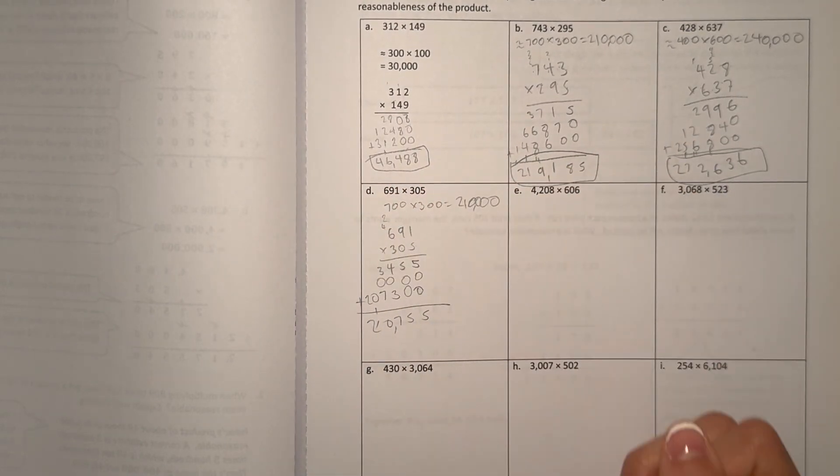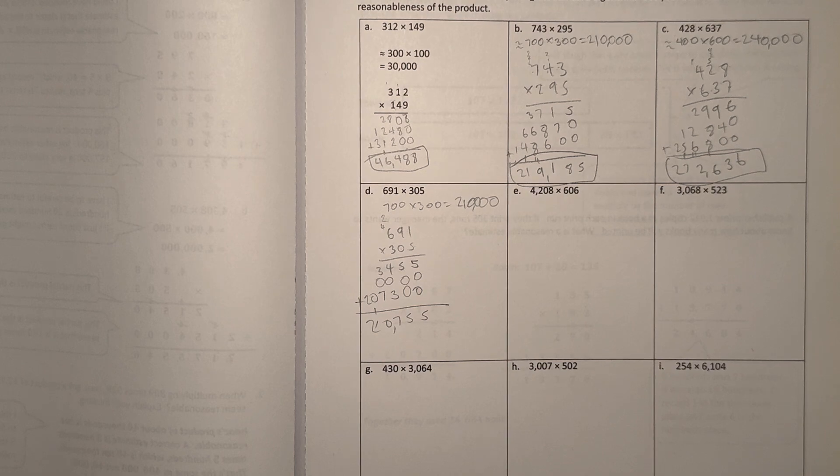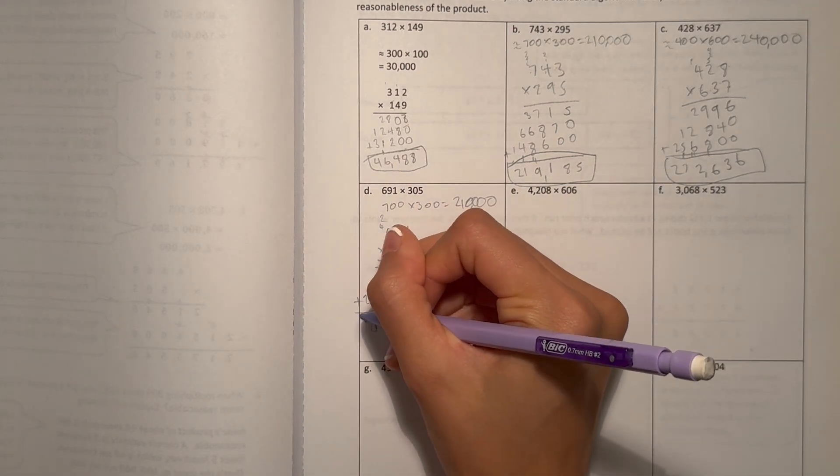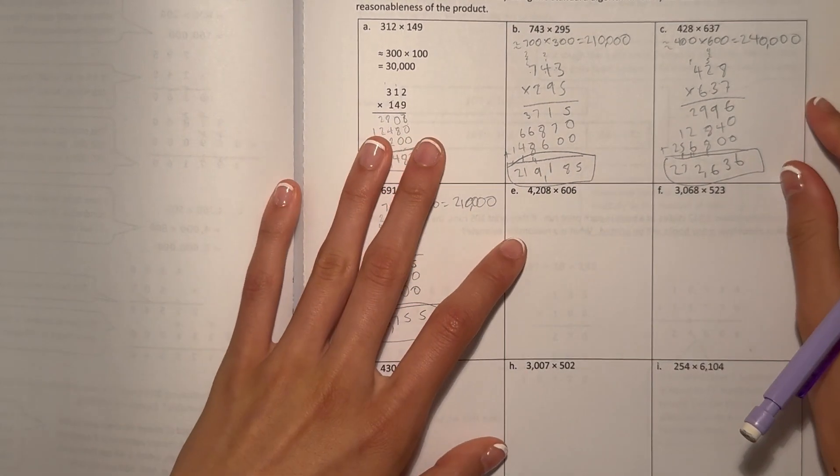So let's add. 210,755. So our answer is pretty reasonable because it's pretty close to our estimate.